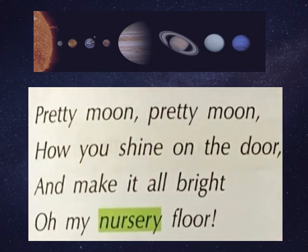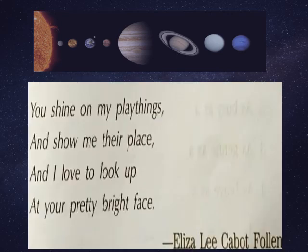Pretty moon, pretty moon, how you shine on the door and make it all bright, O my nursery floor! Now, young children are praising the moon. It is shining so brightly and its light is falling on the door and the room floor. You shine on my playthings and show me their place, and I love to look up at your pretty bright face. You are making my toys so shining and I can see them clearly. I am very happy to look at you, especially at your beautiful face.